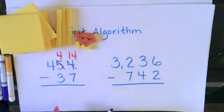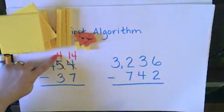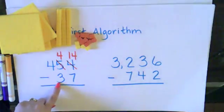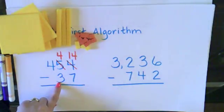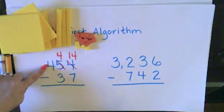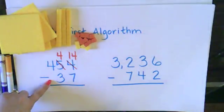So now I can move to my 10s place. Here I have 4 10s and I need to take away 3 10s. Can I do it? I can. So I don't need to do any trading. Then I look at my 100s place and I see I have 4 100s and I'm not taking away any 100s, so I can do that subtraction also.